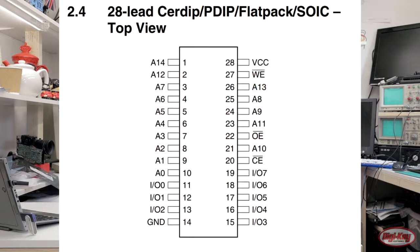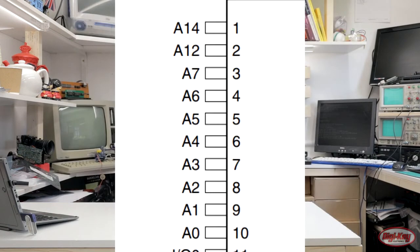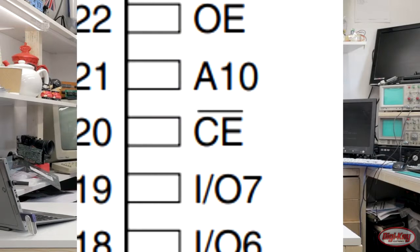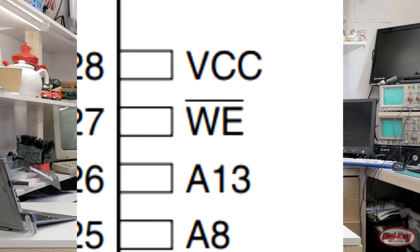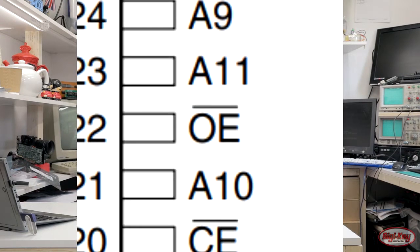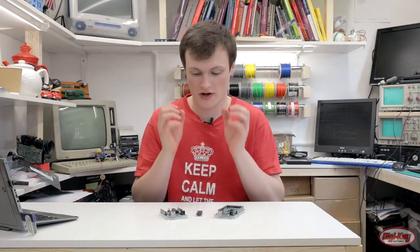Parallel chips, unlike serial chips, have quite a few pins and these pins have different functions. The pins on parallel chips include address pins, which select the specific memory area that you want to access. You have data pins which hold the actual data value itself. You have a chip select pin used to select the chip, a write pin which writes to the chip, and then a read pin or output enable pin which is used to read data off the chip.